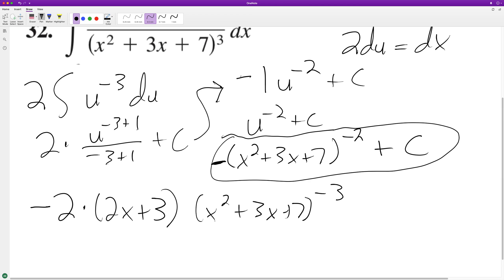So we have, bring down the two, we had a negative one. So that cancels that out. So we get positive two. So that becomes four x plus six.